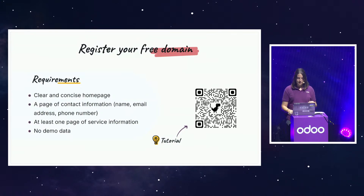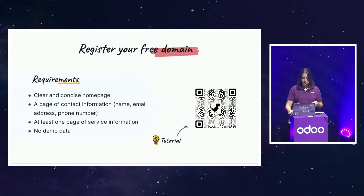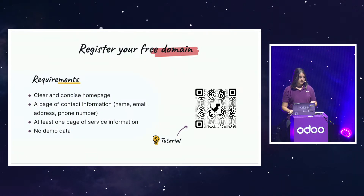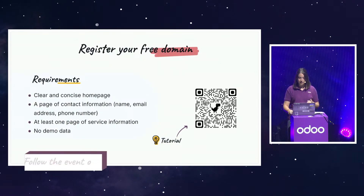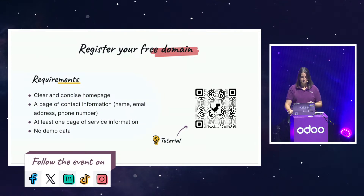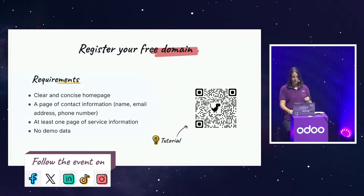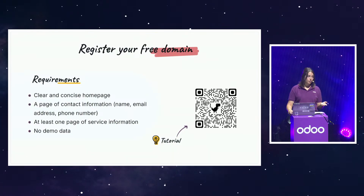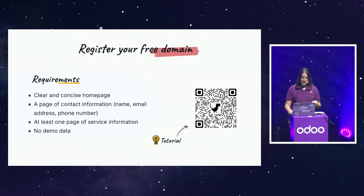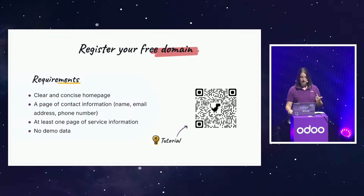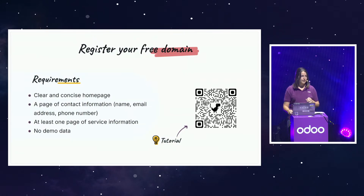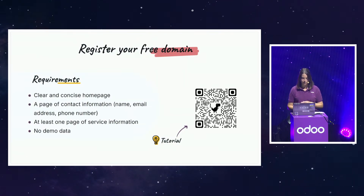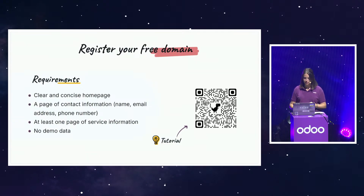Keep in mind that once your website is published and your domain registered, it will be visible online and reachable by your potential customers. It's not good for your business visibility if your website is completely under construction. To have your request accepted, you need to have a clear and concise homepage — we need to know what your business is about. You also need to have a page of contact information, either for you or your company: name, email, address, and phone number. By default, your website has fake contact information, so adding your own data is really important.